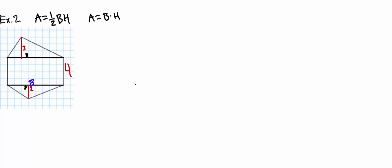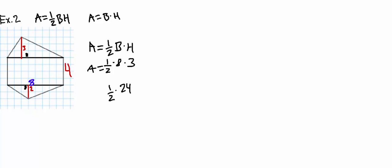Now we plug in what we know. I like to start with the triangles first. So, area equals one-half base times height. We know our base is 8 and our height is 3, giving us one-half times 24. The area for the top triangle is 12.